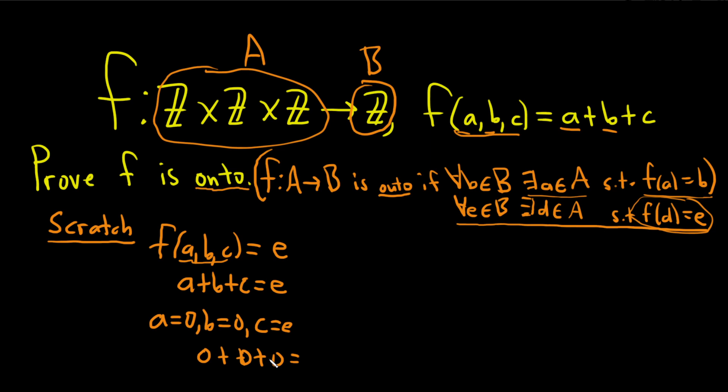And then we certainly have 0 plus 0 plus E equals E, right? So A plus B plus C equals E, that's an E. So we can take these three and create the following ordered pair, and this will work, right? This will be an element in Z cross Z cross Z, such that if you plug it into this function, you're just going to get E. Let's go ahead and write the proof.